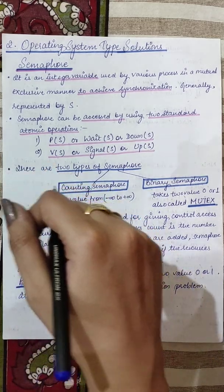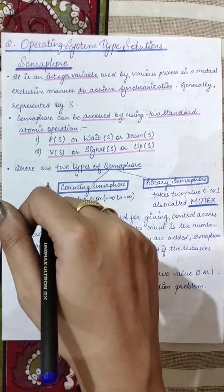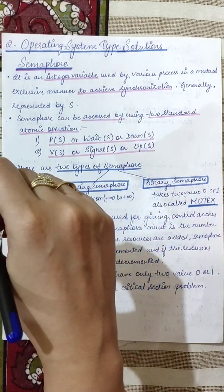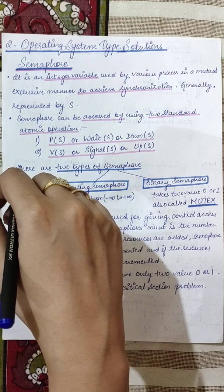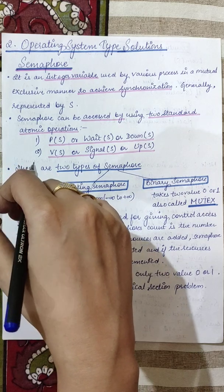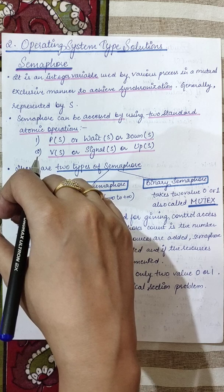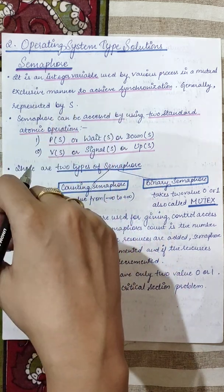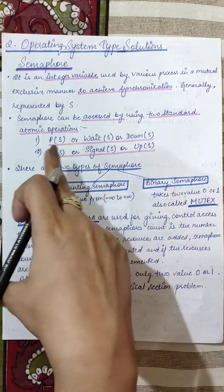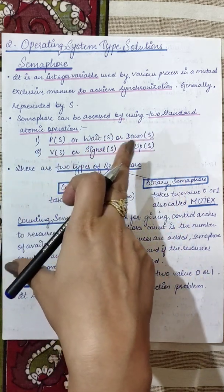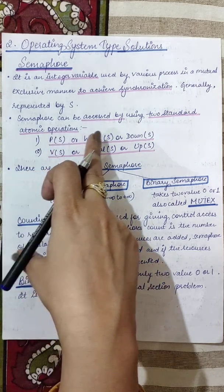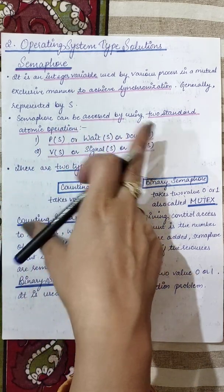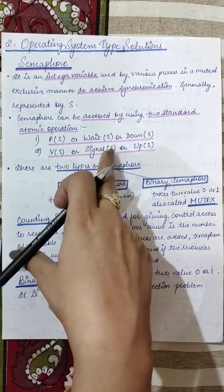Semaphore is an integer variable that we will use by various processes in a mutually exclusive manner — यानि कि एक बार में एक ही process use कर सकता है. इसको represent किया जाता है S से. It can be accessed by using two standard atomic operations: P, Wait, or Down — और V, Signal, या Up.